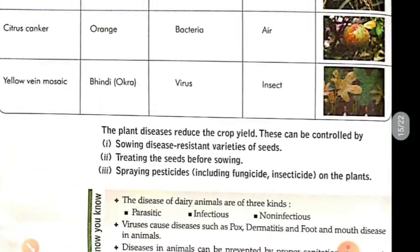Plant diseases reduce the crop yield and efficiency of crop production. These can be controlled by growing disease-resistant varieties of seeds, treating the seeds before sowing, and spraying pesticides at regular intervals in the field.